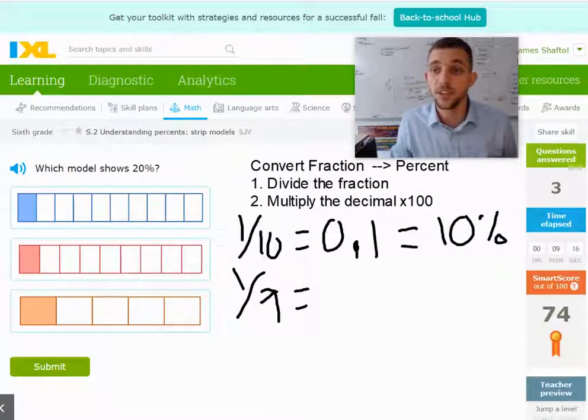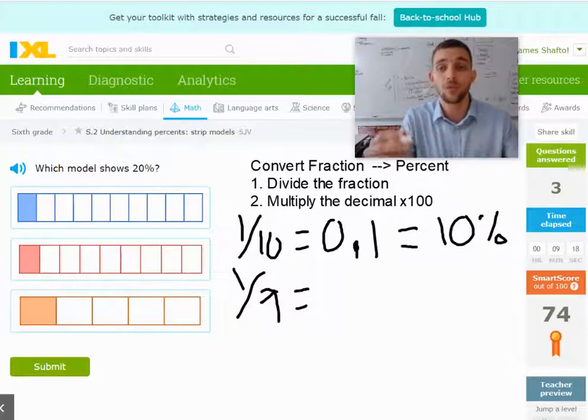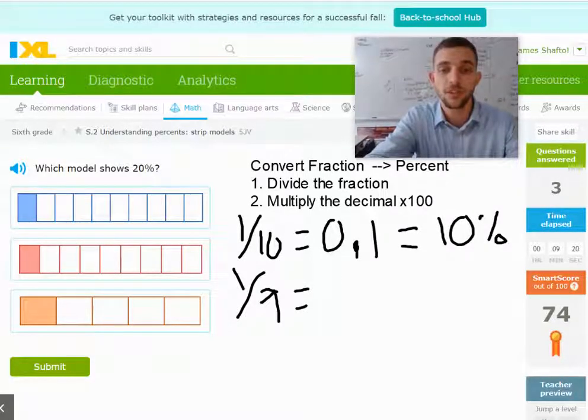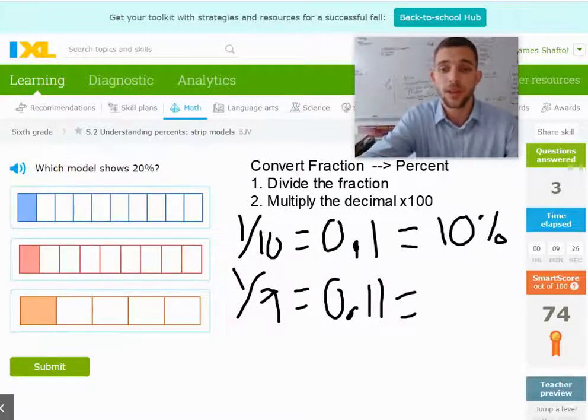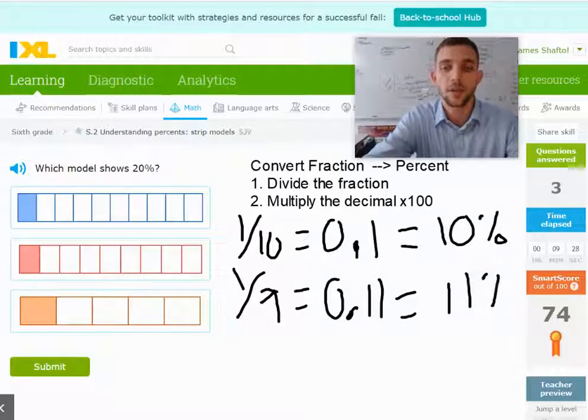So this is going to be 0.11. I like to round to two decimal places, so this is going to be 0.11, because we have 11 and we round it. And this will be 11 percent.